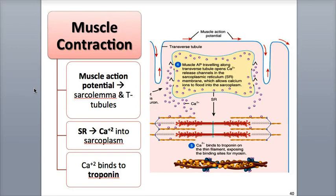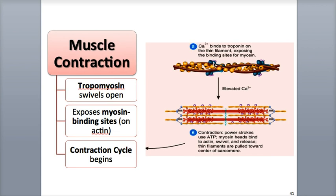When muscle contraction is triggered, calcium ions stored in the sarcoplasmic reticulum, or SR, in the muscle fiber, are released into the sarcoplasm. The calcium ions bond to the regulatory protein troponin, located on the thin filaments. Then troponin's shape changes, which causes tropomyosin, the other regulatory protein, to swivel away and expose the myosin binding sites on the actin.